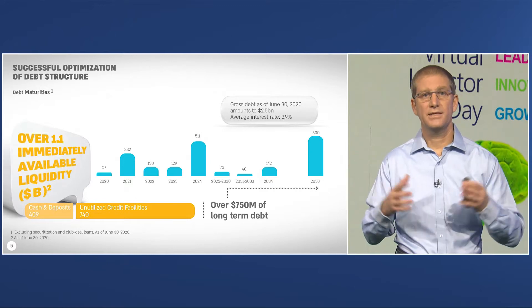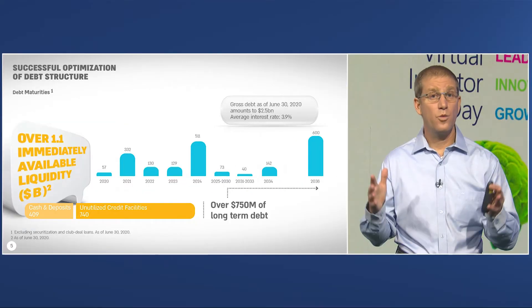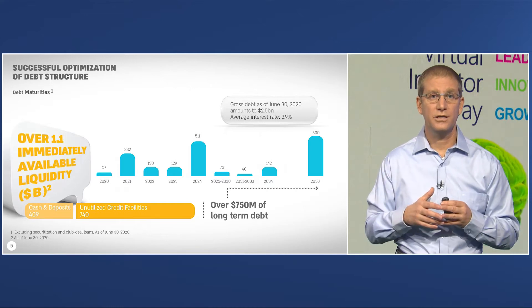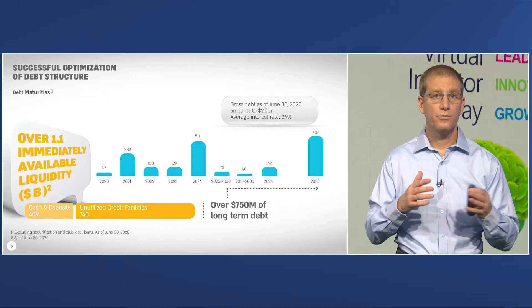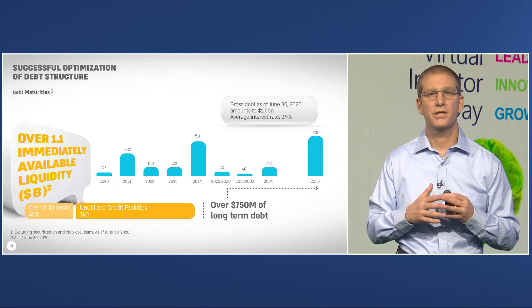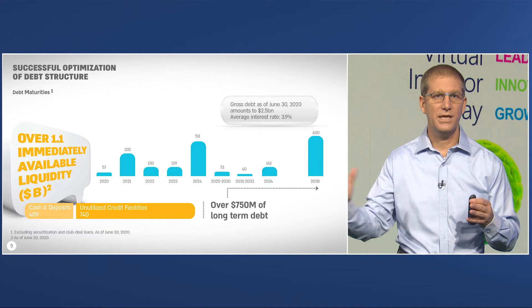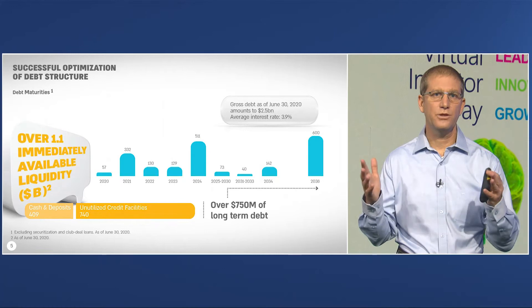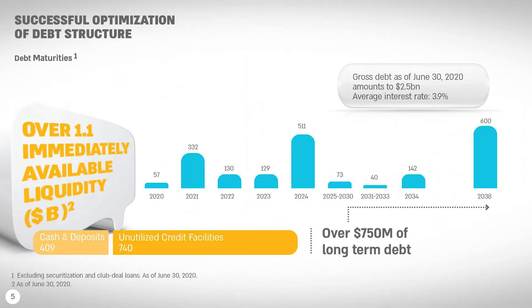These slides outline the way we manage our debt portfolio. We maintain over $1.1 billion of available liquidity in a combination of cash, deposits, and immediately available credit facilities. Moving to the maturities of our debt portfolio, we moved over $750 million of debt maturities to over 10 years. You can see that we don't have any meaningful principal debt payments in the coming years.